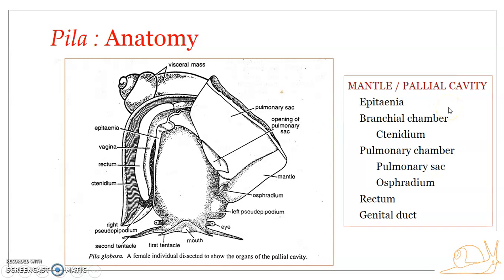The mantle cavity is the space housed within the mantle at the visceral mass region. The part of the mantle enveloping the anterior part of the body encloses a larger space referred to as the mantle cavity or palleal cavity. The complete complex of organs found inside the mantle cavity together is referred to as the mantle complex or palleal complex.